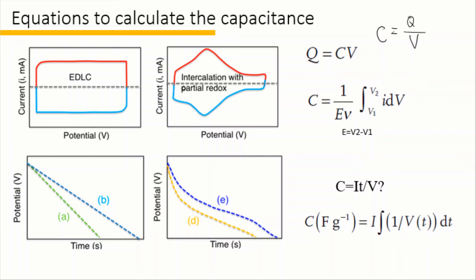If we are calculating the capacitance from CV, then we can derive the equation into this new formula: C equal to 1 over E times the integral from V1 to V2 of i dV. Here E equal to V2 minus V1.